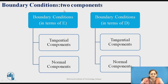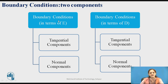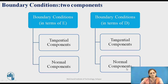Boundary conditions can be defined for E-bar or in terms of D, where E is the electric field intensity and D is the electric flux density. Boundary conditions can be calculated in terms of two components: tangential components and normal components. E-bar can be found in terms of the tangential component as well as the normal component, whereas D-bar can also be calculated in terms of tangential and normal components.